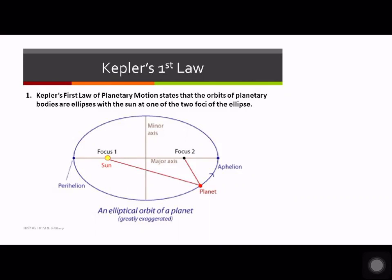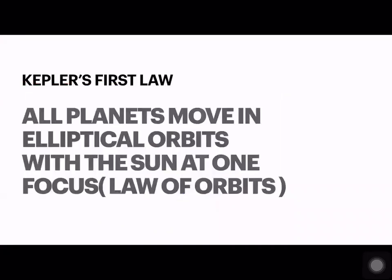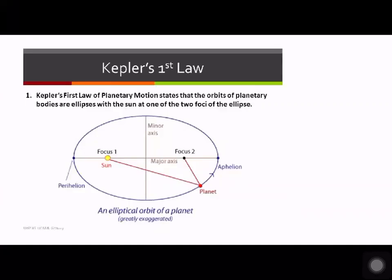For the revolution of Earth or any mass around the sun, Kepler observed that the sun is at one focus of the ellipse, and the other focus is empty. So Kepler's first law: all planets move in elliptical orbits with the sun at one focus — that's all you need to know.